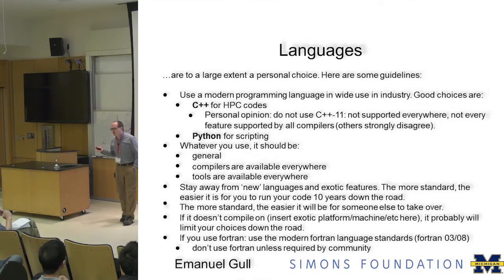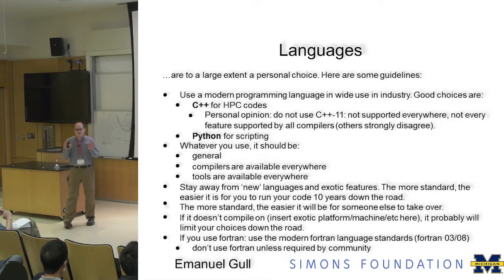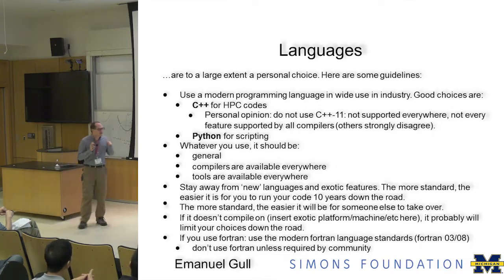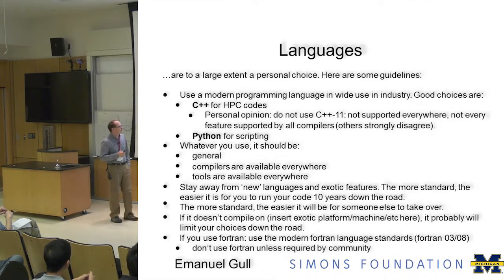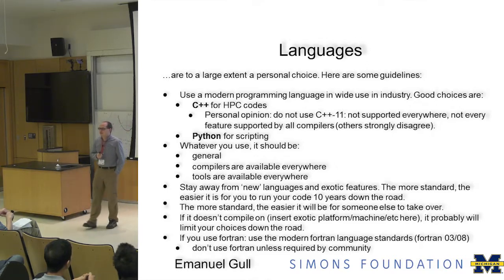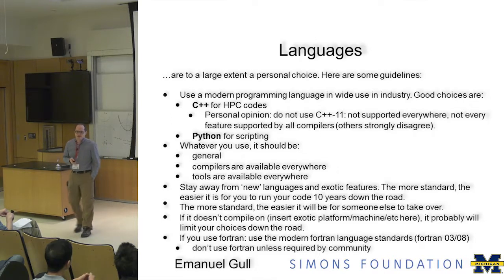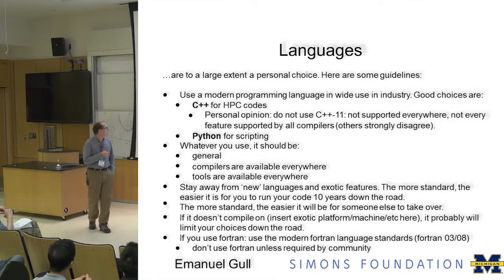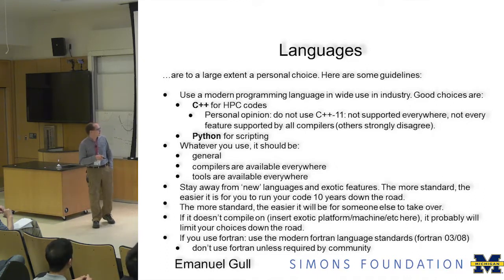Stay away from new languages and exotic features — Julia, for example, is a great idea but horrible in practice. Why? Because 10 years down the road it may disappear. Wait for somebody else to take that risk. Use standard tools that really work everywhere, and that way your code will still be okay 10 years down the road. If it doesn't compile on your favorite platform — Fujitsu compilers and so on — it will limit your choices. If you use Fortran, use the most modern standards you can and don't use it unless required by your community.